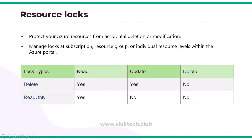After Azure policies, we have resource locks. Resource locks protect your Azure resources from accidental deletion or modification. For example, if you've created a virtual machine for your dev or prod environment, you can ensure that associated resources like disks, public IP addresses, or a bastion host are not accidentally deleted. You can manage locks at the subscription level, resource group level, or at the individual resource level.